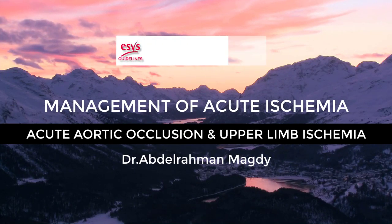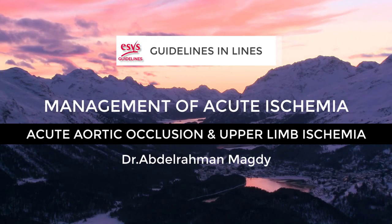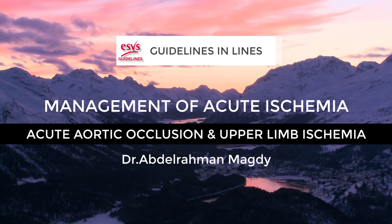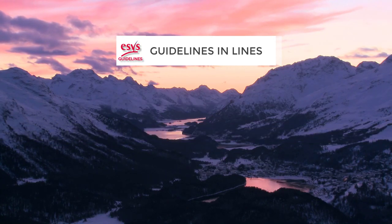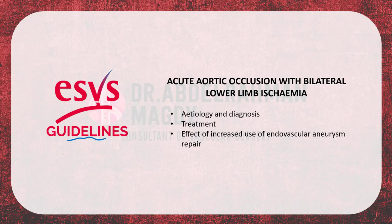Bismillah ar-rahman ar-rahim. Salam alaikum wa rahmatullahi wa barakatuh. We continue with the ESVS Society of Vascular Surgery guidelines for the management of acute limb ischemia. Today we'll talk about two subtypes of acute limb ischemia with special considerations: acute aortic occlusion with bilateral lower limb ischemia, and acute upper limb ischemia.